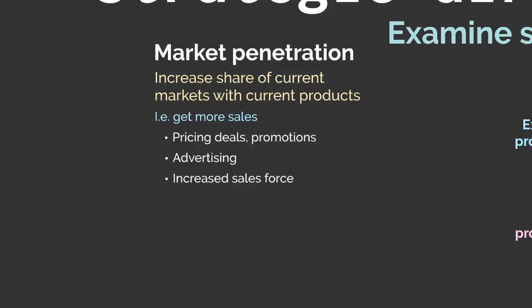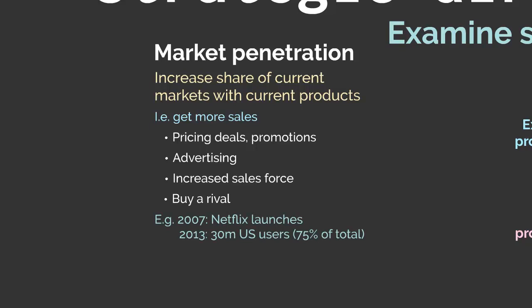Another market penetration strategy is through acquisition — buying a rival. This has the distinctive advantage of reducing competition in the market and increases distribution and availability by maintaining all existing sales outlets. Buying a competitor is also known as horizontal integration, and it delivers an incredibly quick increase in market share, along with the advantage of reduced competition.